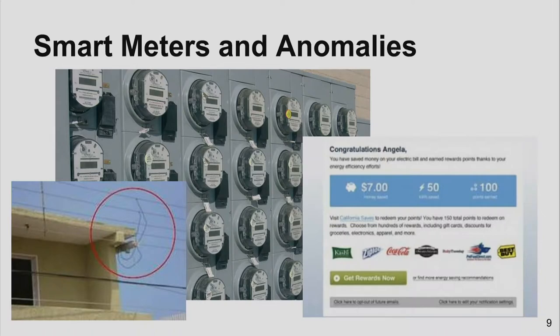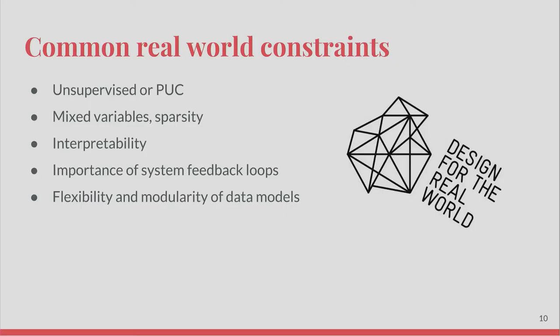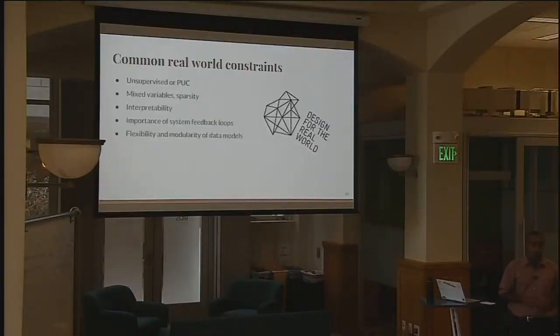Part of the problem is to really understand what an outlier is and what it means. I'll use the smart meter example to point out some real-world constraints I commonly deal with in anomaly detection. You often have this idea of supervised learning, but when dealing with anomaly detection problems you often do not have fully supervised problems. A fully supervised problem is where you have two or more categories with lots of examples, and you try to find a boundary through your feature space that separates them. A semi-supervised problem may be a case where you are missing data — a positive unlabeled class where you do not have labels for what you're trying to find.